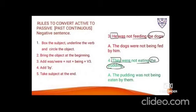Example 3: 'He was not feeding the dogs.' 'He' is the subject, 'was feeding' is the verb, 'the dogs' is the object. Bring 'the dogs' ahead — it was 'he' so 'was' was used, but 'dogs' is plural so use 'were'. Put 'not' down. Give -ing → 'being'. Third form of feed: fed. Add 'by him'. Result: 'The dogs were not being fed by him.'